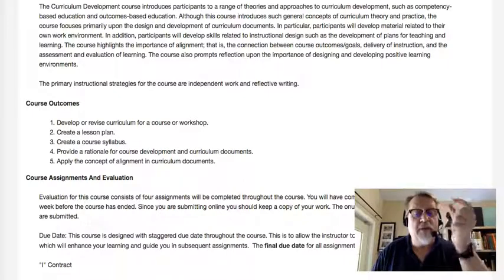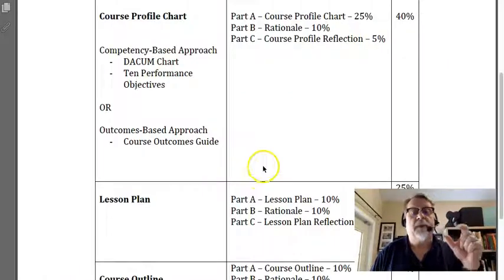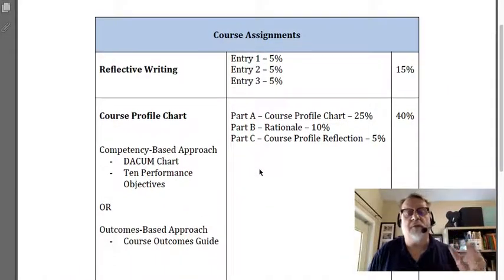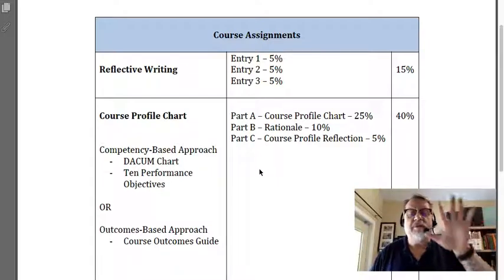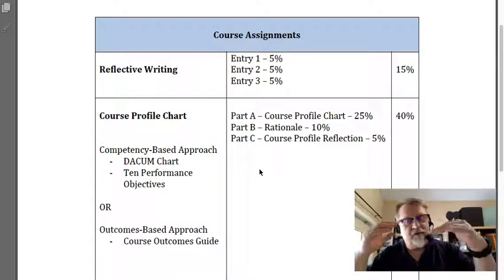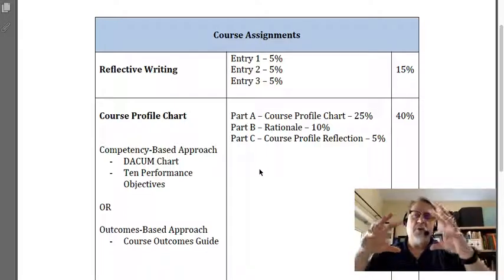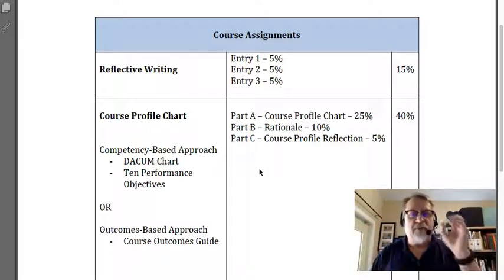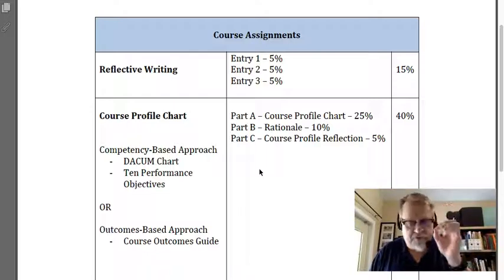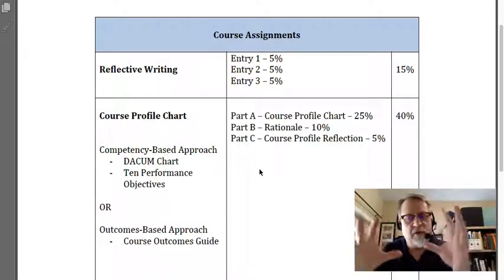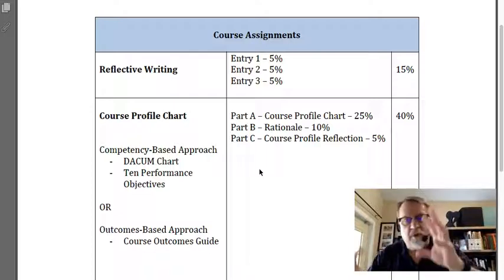With respect to the assignments for 3210, you really have only four assignments. There's some parts to those assignments, but there's really four assignments. If we look at the big picture, there's one major assignment and then two related assignments to that major assignment.